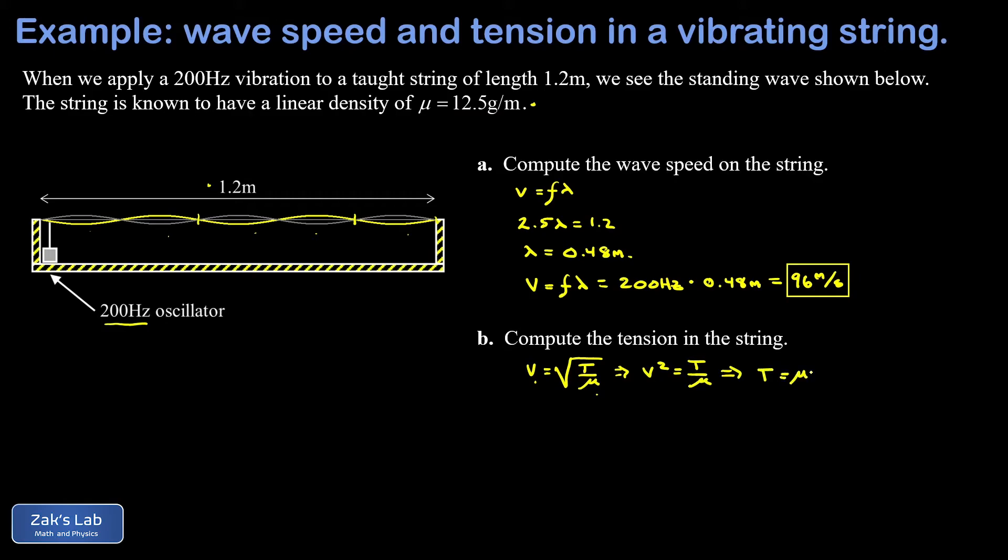We need to plug in mu in SI units, that's kilograms per meter. So shift the decimal point three times, I get 0.0125 kilograms per meter, and then we're multiplying that by the square of the wave speed, so 96 meters per second all squared. Into three significant digits I get 115, and paying attention to the units here, I have kilograms, one factor of meters is going to cancel. When I square that meters per second, I end up with one surviving factor of meters in the numerator and then I have divided by second squared. So my units are kilogram meters per second squared, which is indeed a newton, and I get a tension of 115 newtons in the string.